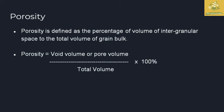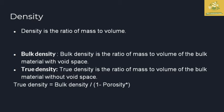Density is the ratio of mass to volume. Density is classified as bulk density and true density. Bulk density is the ratio of mass to bulk volume including void space, while in true density the void space is excluded. True density is equal to bulk density divided by one minus porosity.